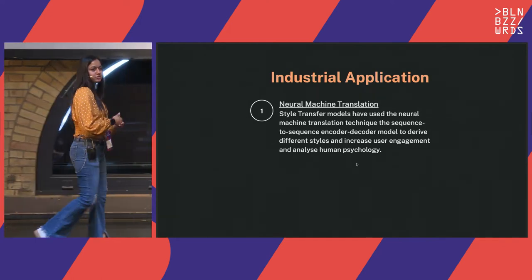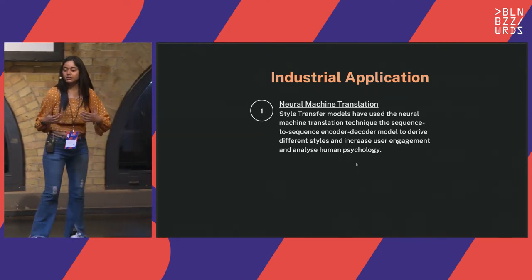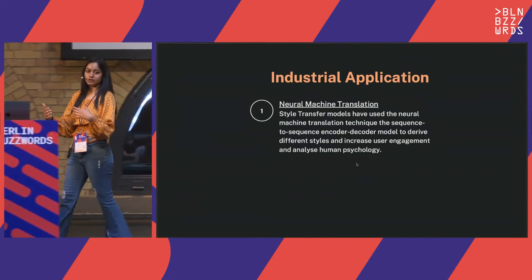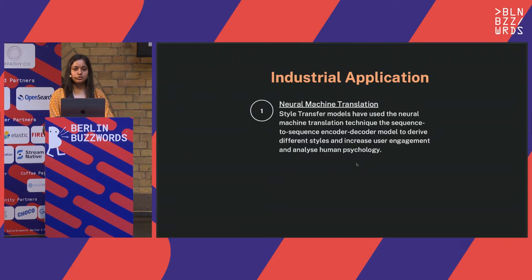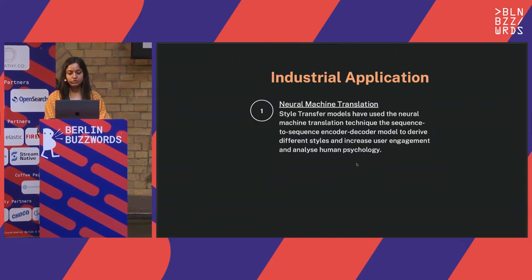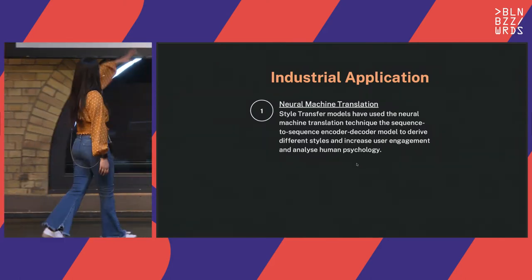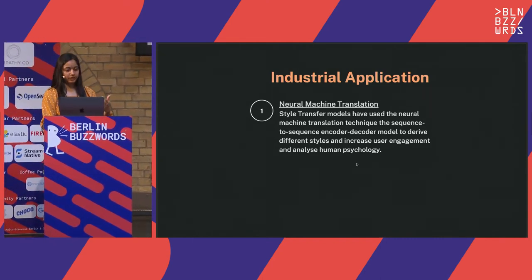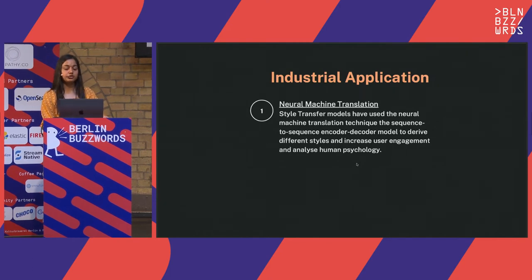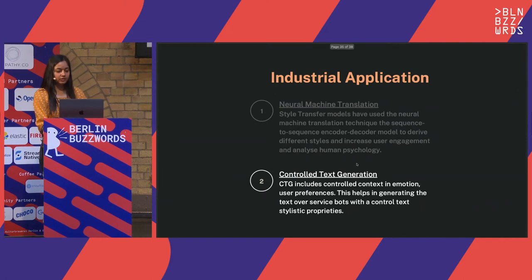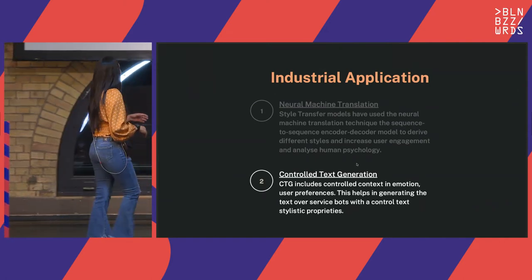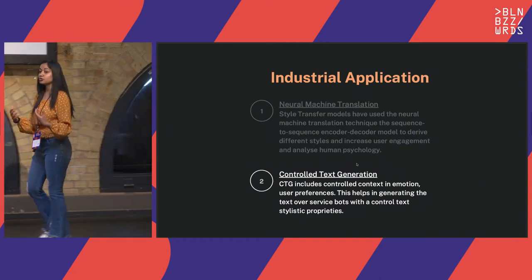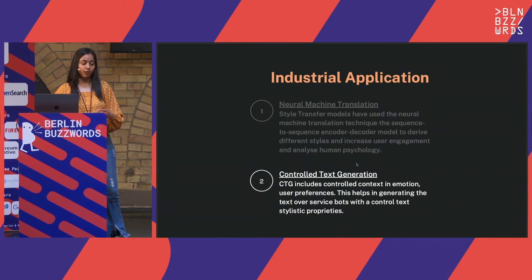Since this is research-based, one application is style transfer in neural machine translation. NMT uses a neural-network-based sequence-to-sequence encoder-decoder approach with human engagement to increase translation efficiency. The second application is text generation, which includes emotion preferences of users and helps control styles and generate better forms of stylistic content in translation.